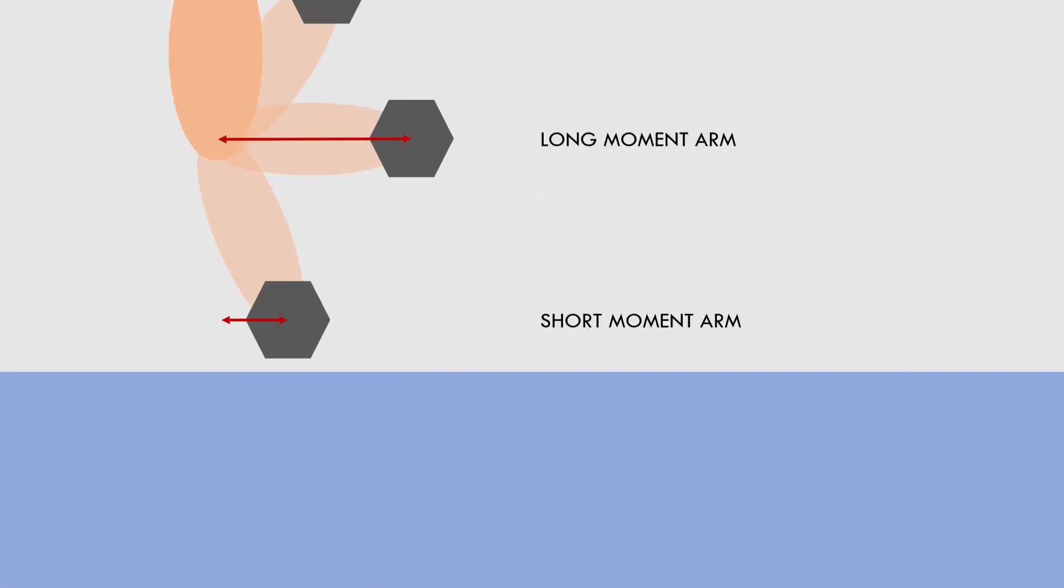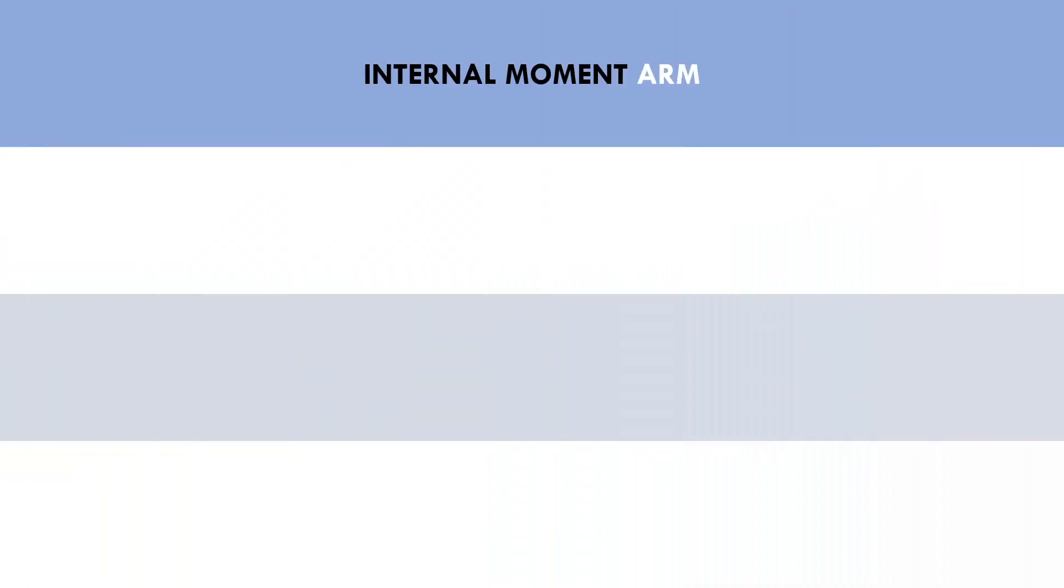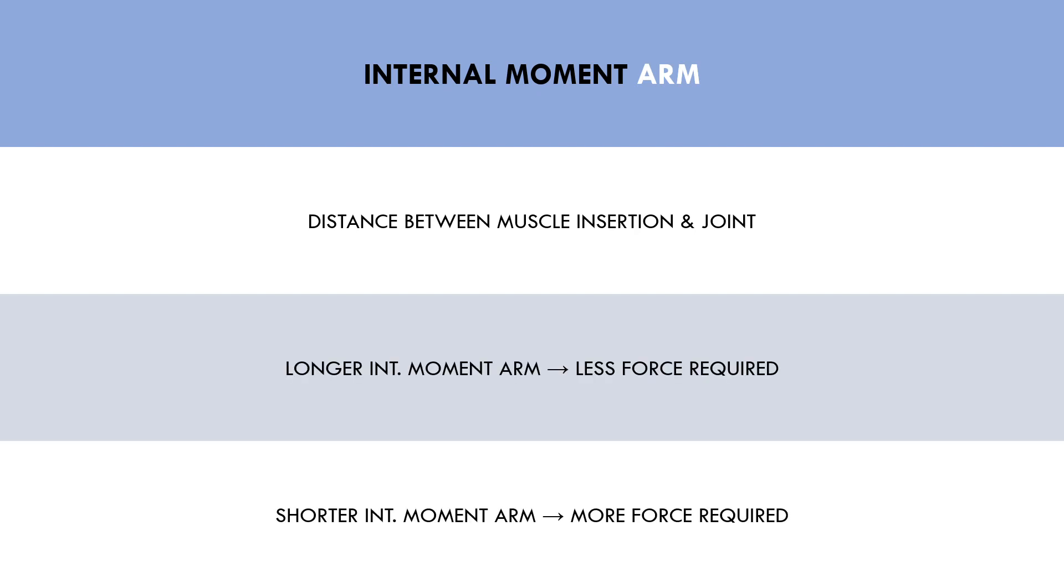The next factor influencing the tension curve of the exercise is the internal moment arm. This refers to the distance between the attachment side of the muscle and the joint. In this case a longer internal moment arm actually makes the lift easier while a shorter moment arm makes the lift more difficult.